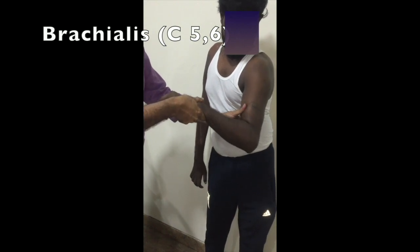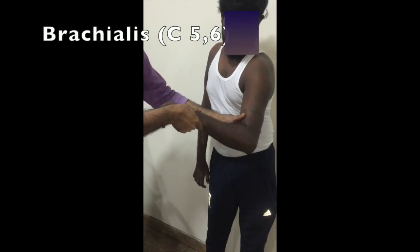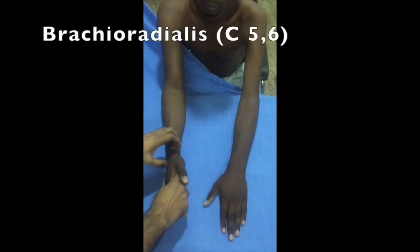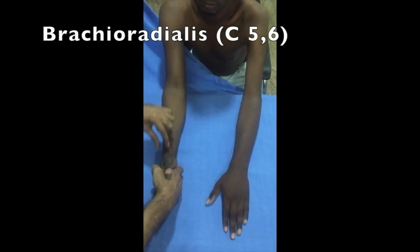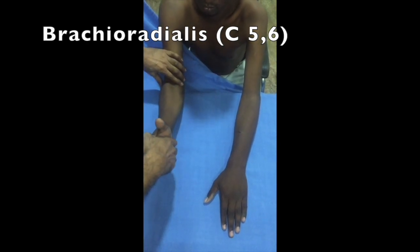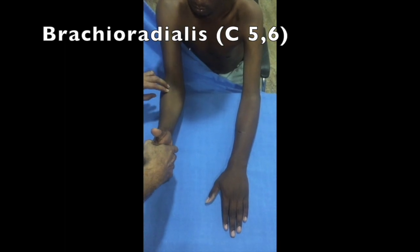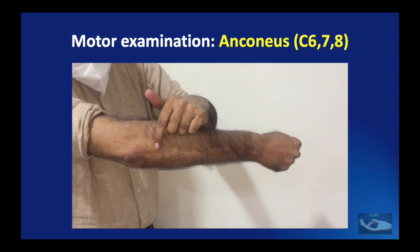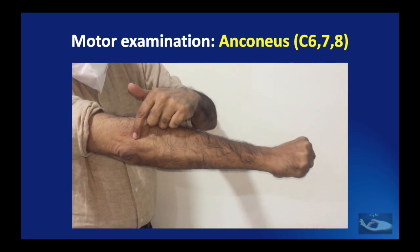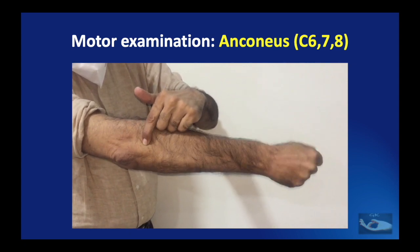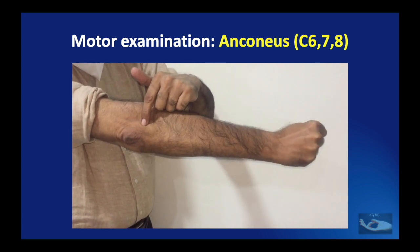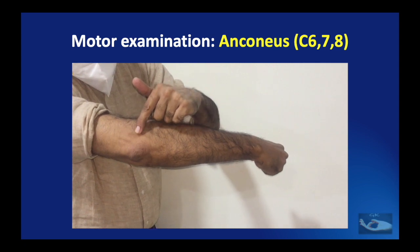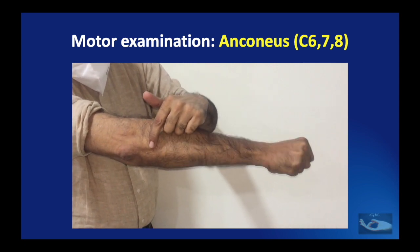The main nerve supplied to the brachialis is from the musculocutaneous nerve with a root value of C5-6, but when the radial nerve branch supplies the brachialis it has a root value of C7. An important point: elbow flexion must be tested with the forearm in mid-prone position. The brachialis muscle can be palpated and even seen becoming prominent during this movement. The anconeus muscle originates from the posterior surface of the lateral epicondyle of the humerus and inserts on the superior posterior surface of the ulna and the lateral aspect of the olecranon. It acts as an extension of the triceps and stabilizes the joint capsule during full elbow extension, where it can be palpated on the radial side of the subcutaneous portion of the ulna.